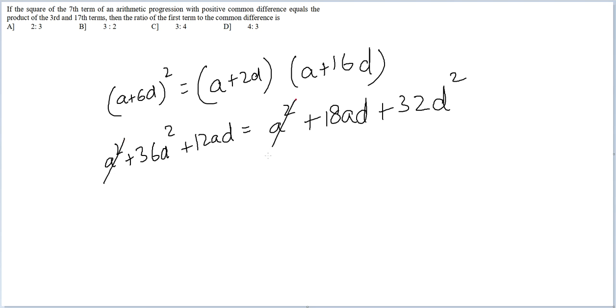A square and A square cancel from both sides. Then you can also see D will get cancelled from every term.